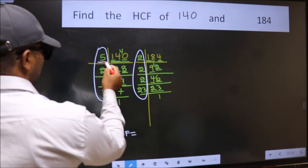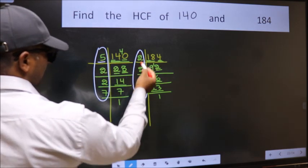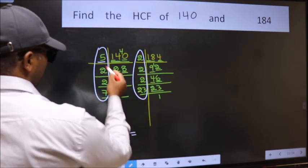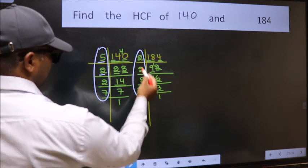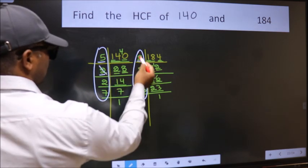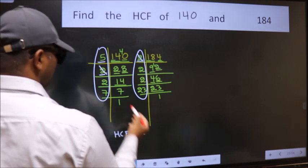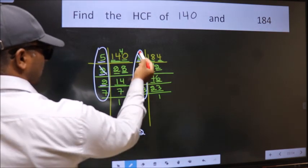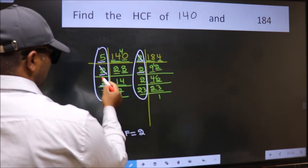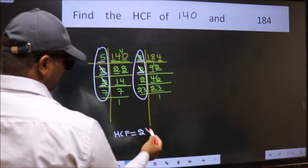Starting with the number 5. Do we have 5 here? No. Next number 2. Do we have 2 here? Yes. So cut 2 right here. Next number 2. Do we have 2 here? Yes. So cut 2 right here.